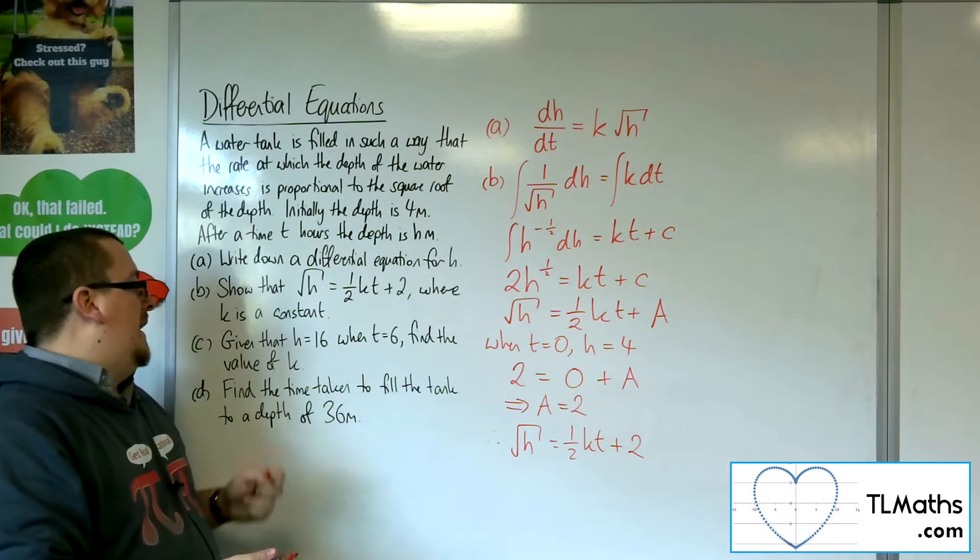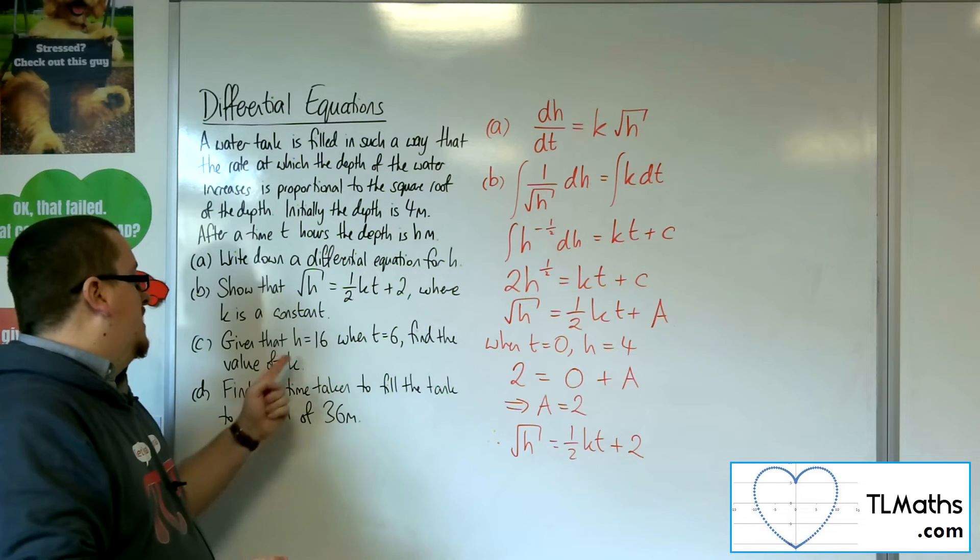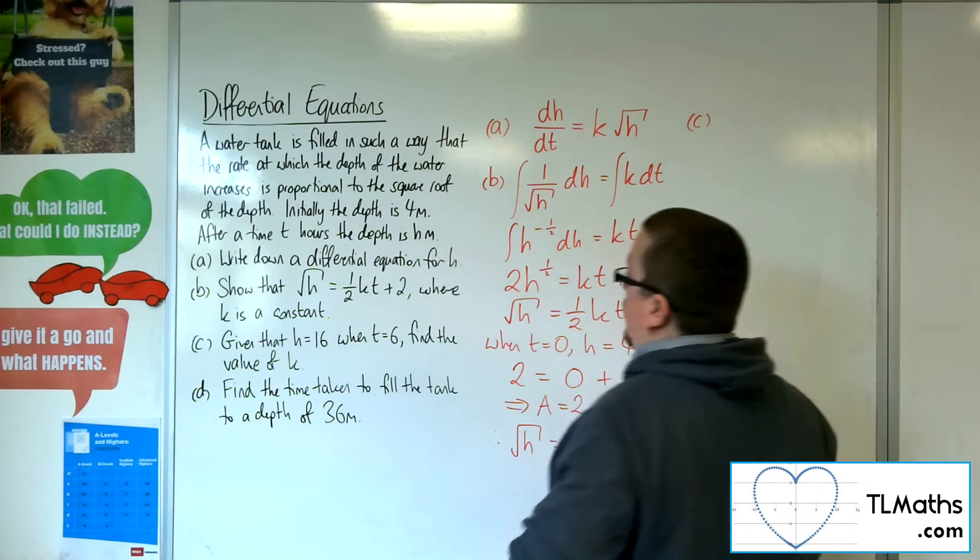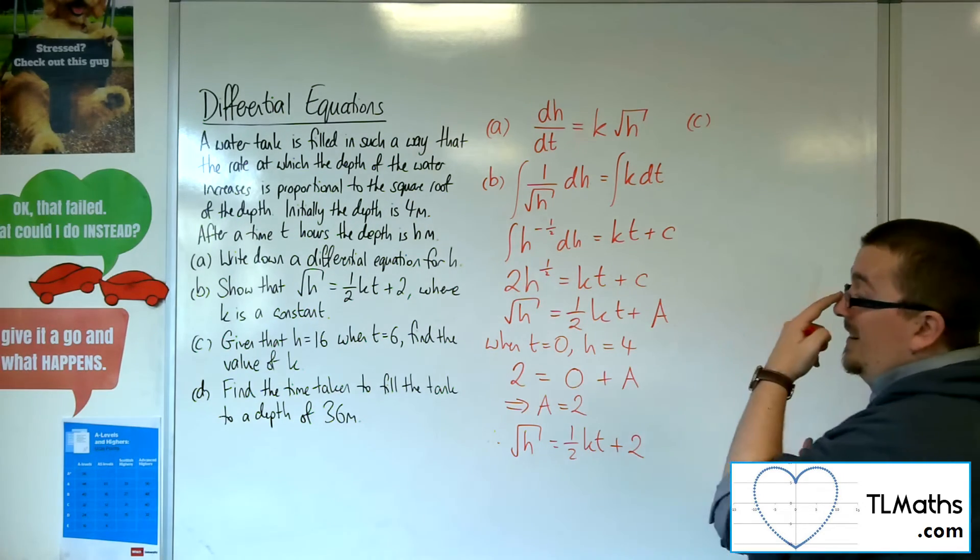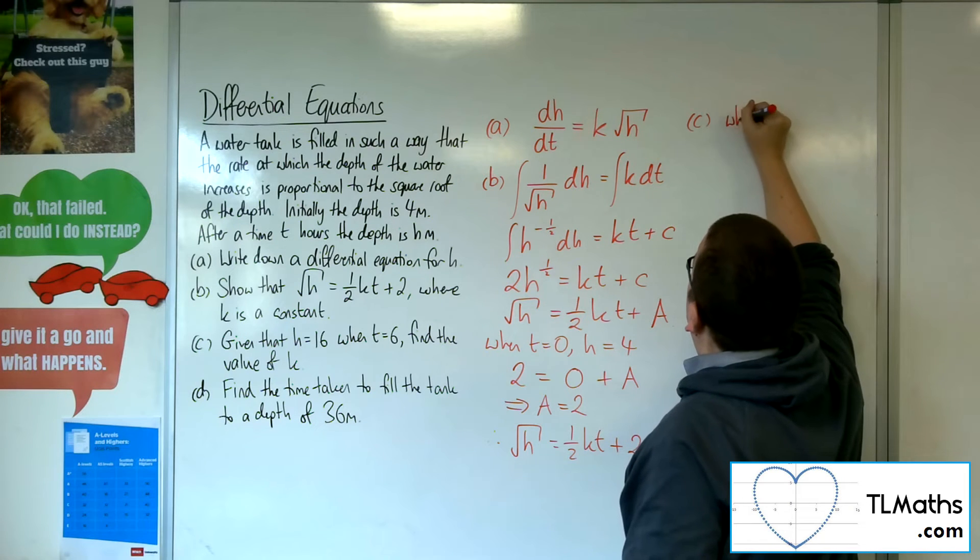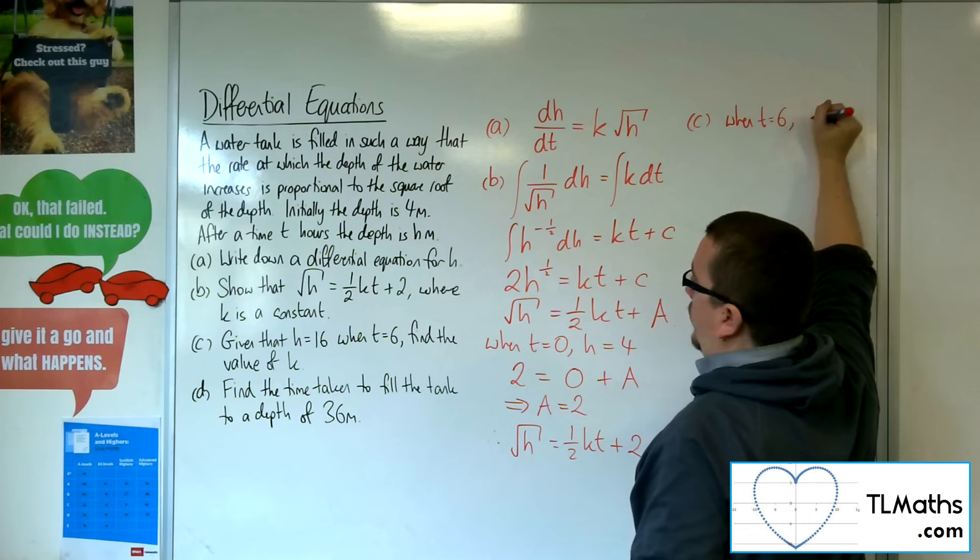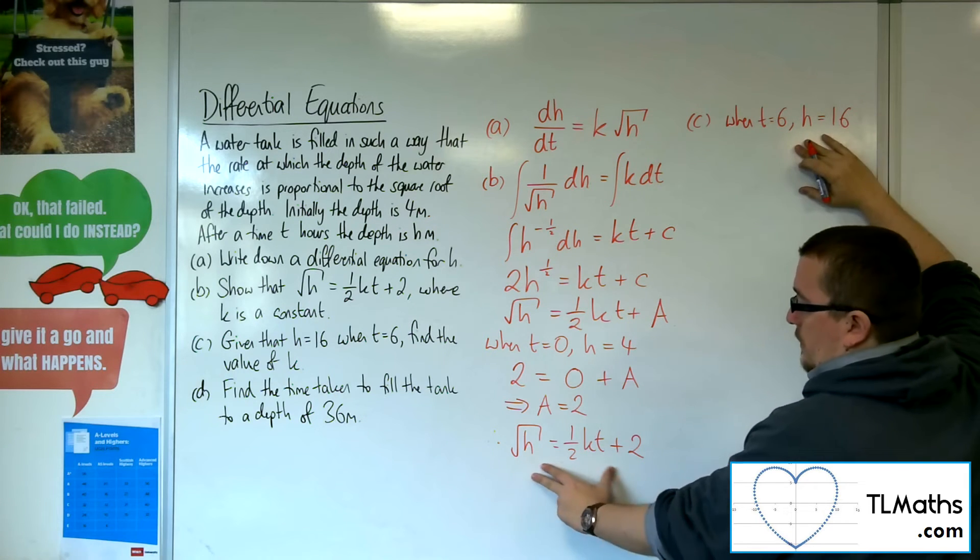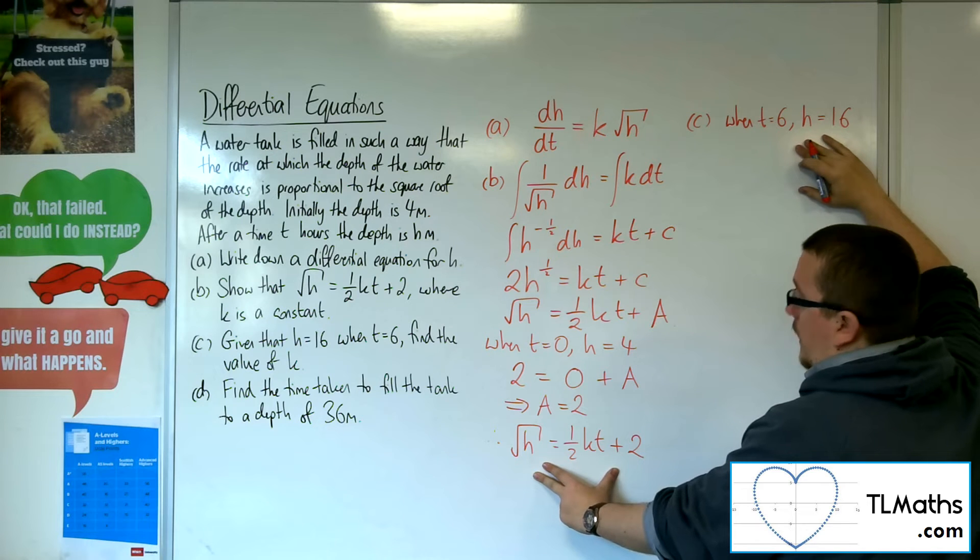Now, part c, given that h is 16 when t is 6, find the value of k. So we've been given, effectively, like a boundary condition, because I've been told that when t is 6, so when time is 6, the depth of the water is 16. So I can substitute those into this equation to work out that value of k.